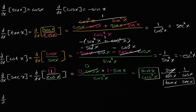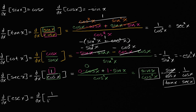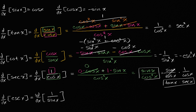Now let's do cosecant. The derivative with respect to x of cosecant of x is the same thing as the derivative with respect to x of one over sine of x. Cosecant is one over sine of x. It's easy to think cosecant might be the reciprocal of cosine, but it's not — it's the opposite of what you'd expect. Cosine's reciprocal is secant, not cosecant. One starts with 's', the other with 'c' — just the way it was defined.